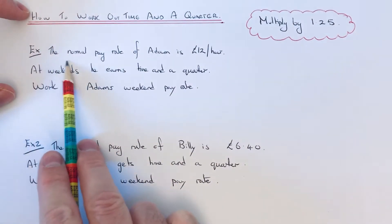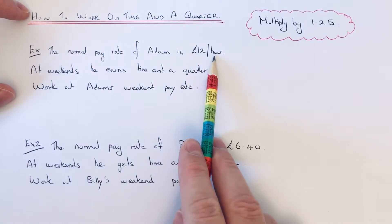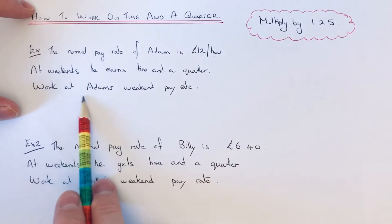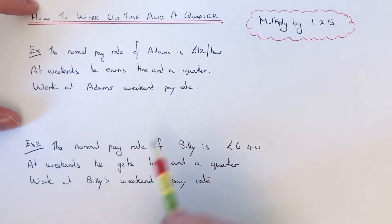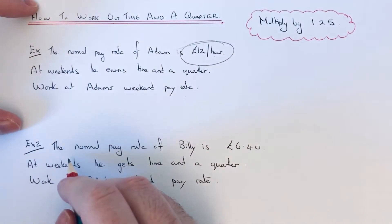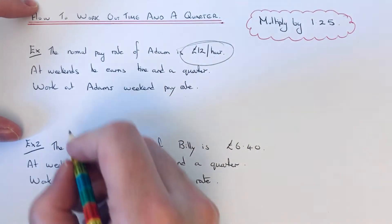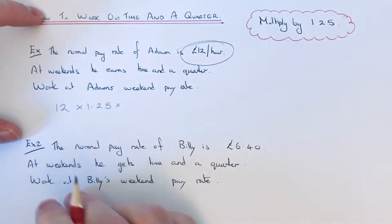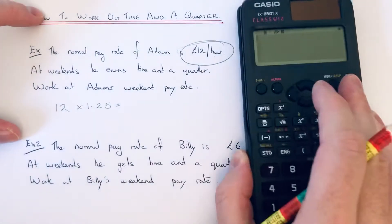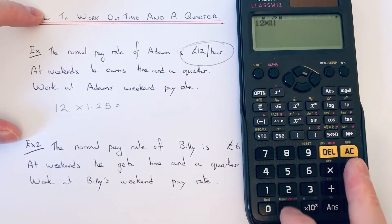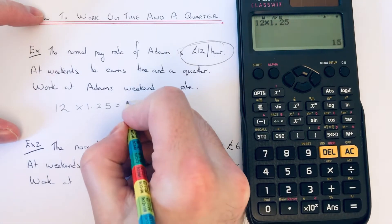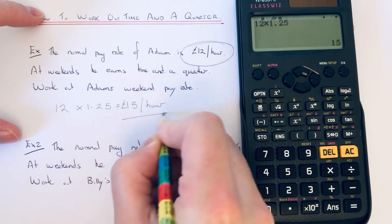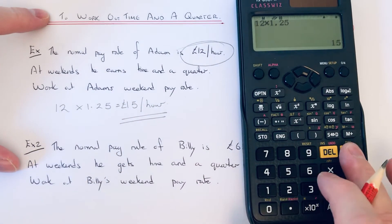So let's have a look at the examples. The normal pay rate of Adam is £12 per hour. At weekends he earns time and a quarter, so work out Adam's weekend pay rate. We just need to multiply his normal pay rate by 1.25 — you could do this by long multiplication or use your calculator. 12 times 1.25 gives an answer of 15, so he gets £15 per hour at the weekend.